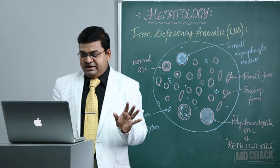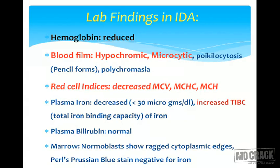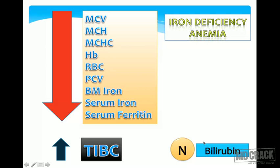Bone marrow aspiration is not indicated for diagnosing iron deficiency anemia unless you want to assess iron stores for research purposes. The marrow shows micronormoblastic erythroid hyperplasia as a response to anemia — the myeloid-to-erythroid ratio becomes 1:1 (normal is 3:1 to 15:1). Normoblasts become micro-normoblasts with ragged cytoplasmic edges. The special Pearls Prussian blue stain shows iron stores are completely exhausted.